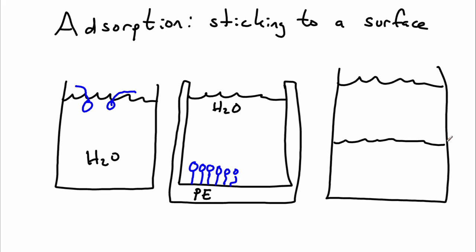We could also stick to an interface. So imagine that we had oil and water. Our surfactants, by gathering at this interface, could put their non-polar chains into the oil and their polar head groups into the water. So all of these are instances of adsorption, which lowers the energy of the system.